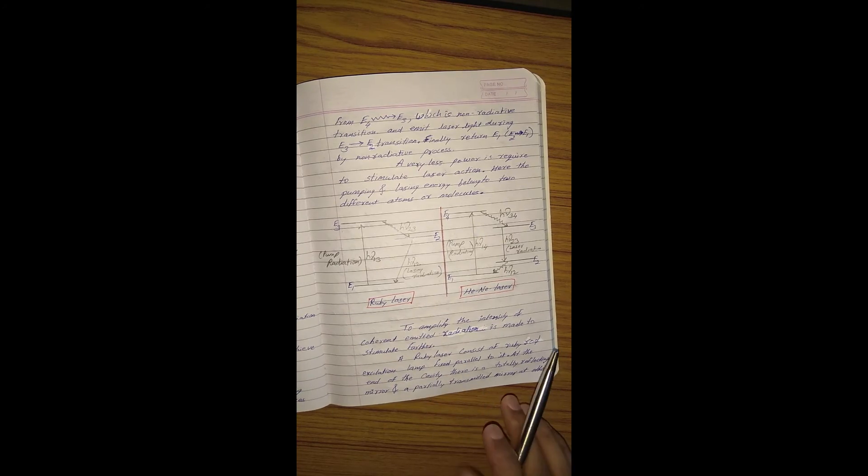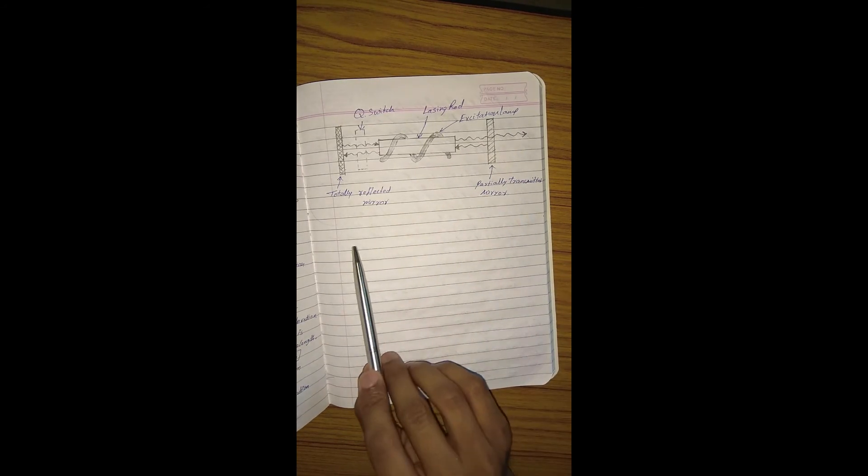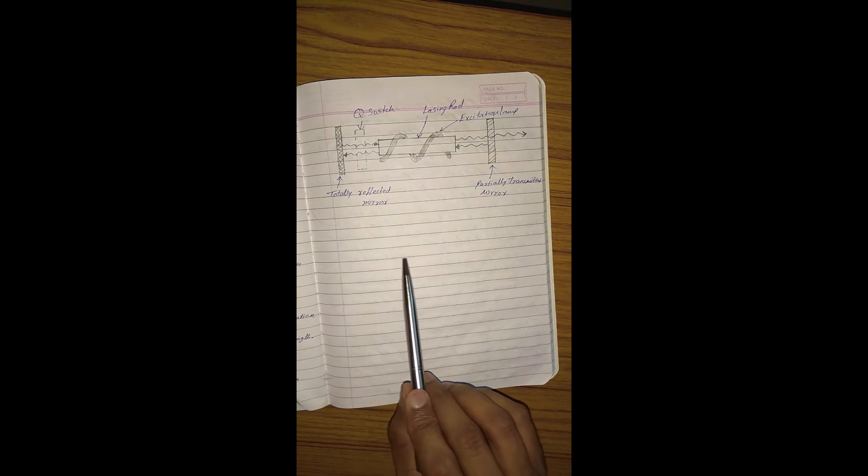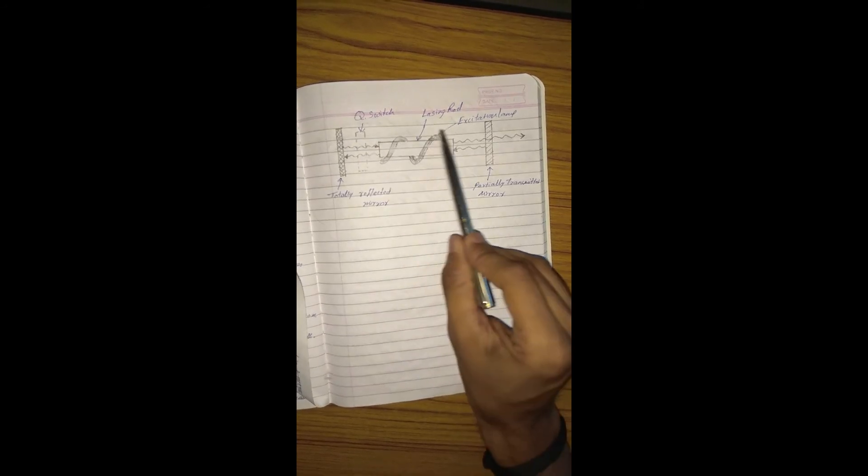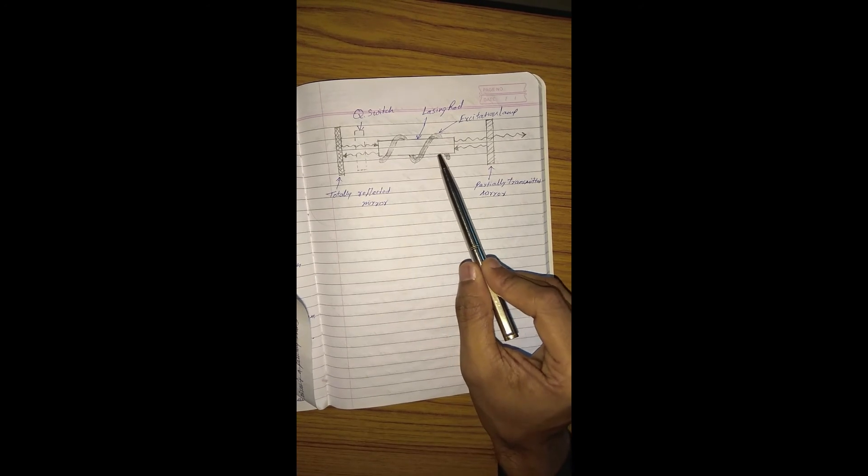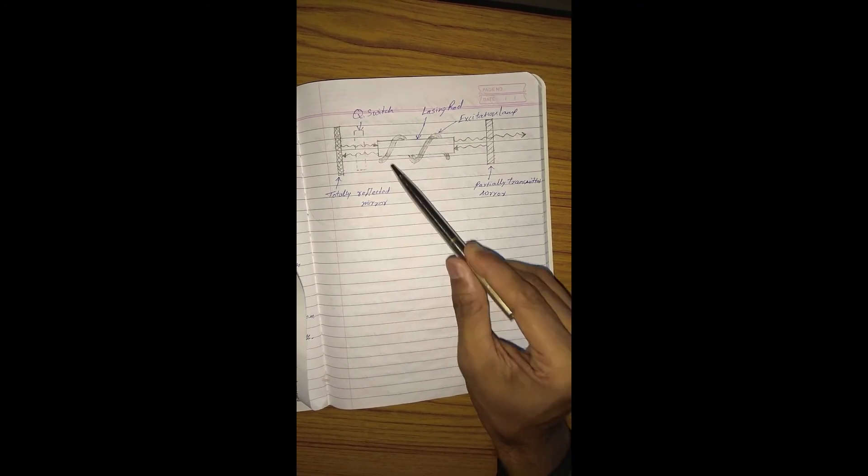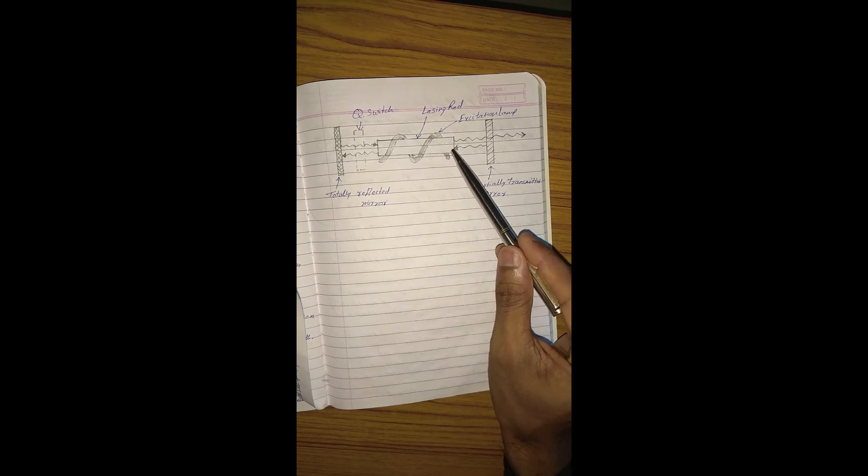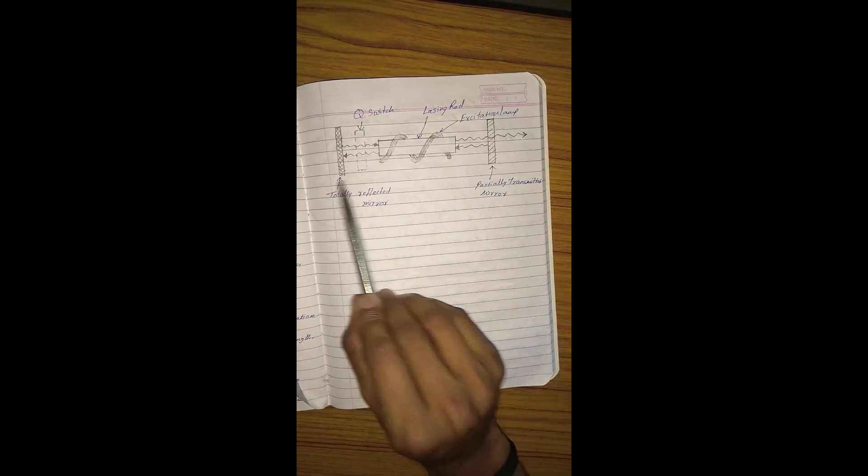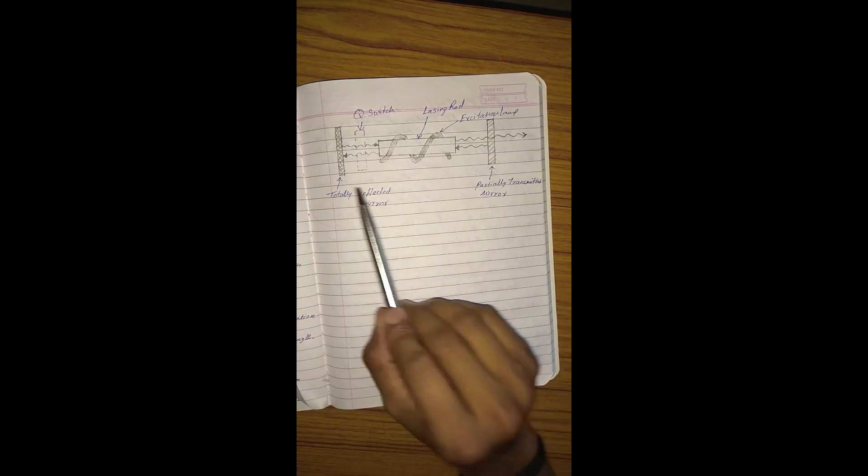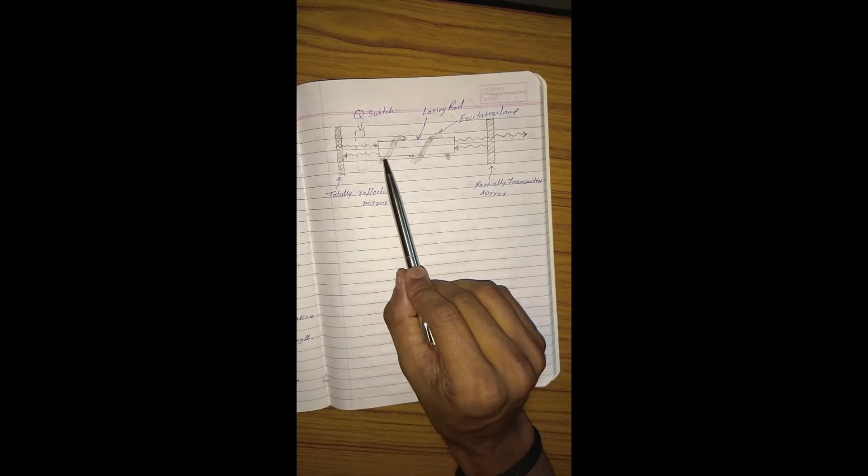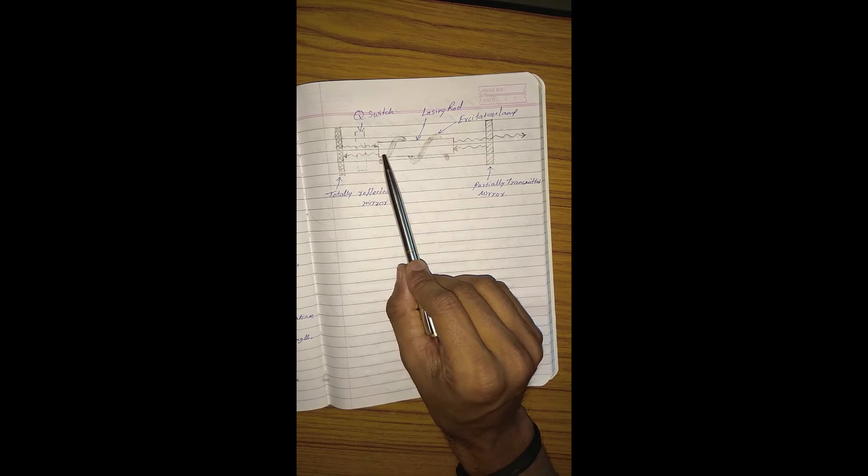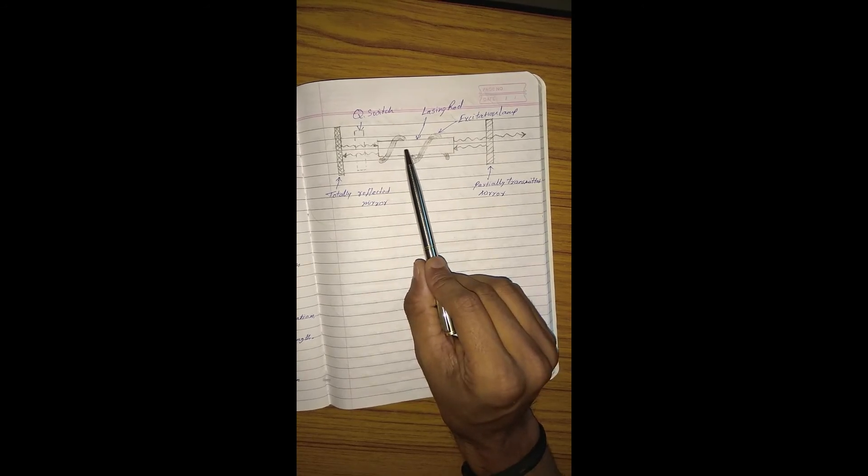This is a rough diagram of ruby laser. Ruby laser consists of a ruby rod which is surrounded with an excitation lamp fixed parallel to it. At the end of the cavity, there are two mirrors: one is a totally reflected mirror and another is a partially transmitted mirror. The excitation lamp helps to pump the lasing material and causes population inversion.